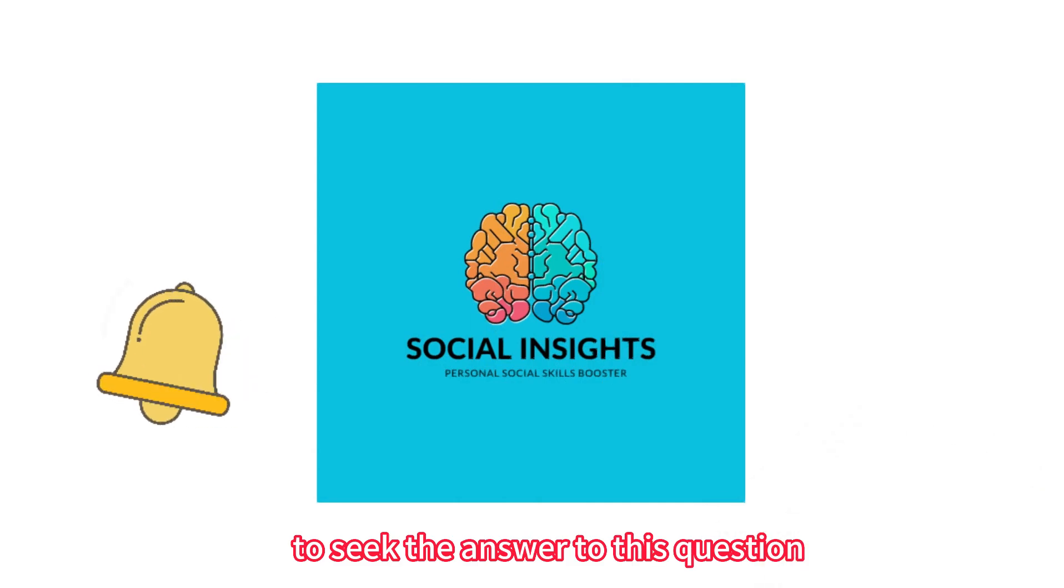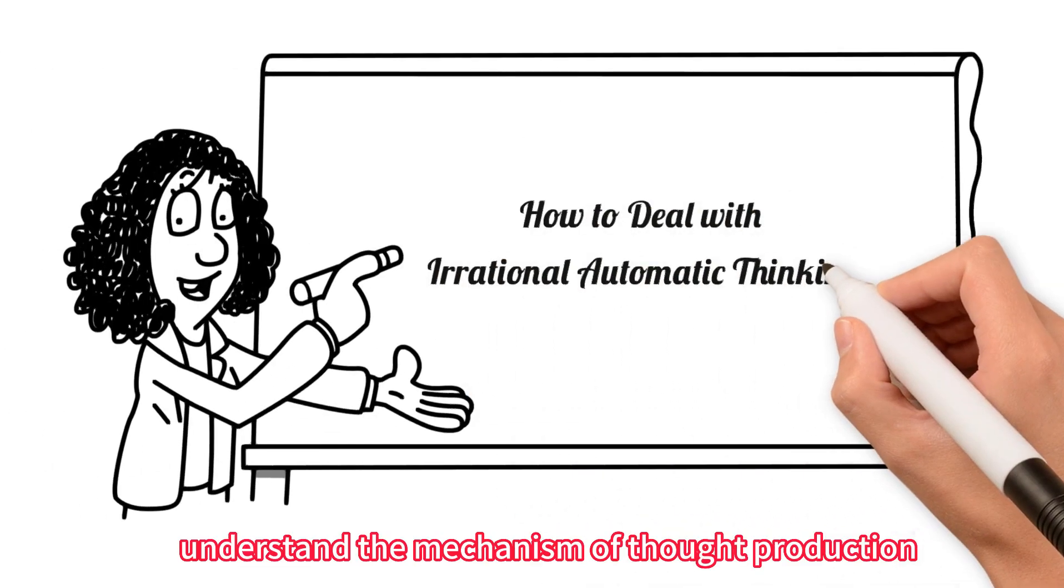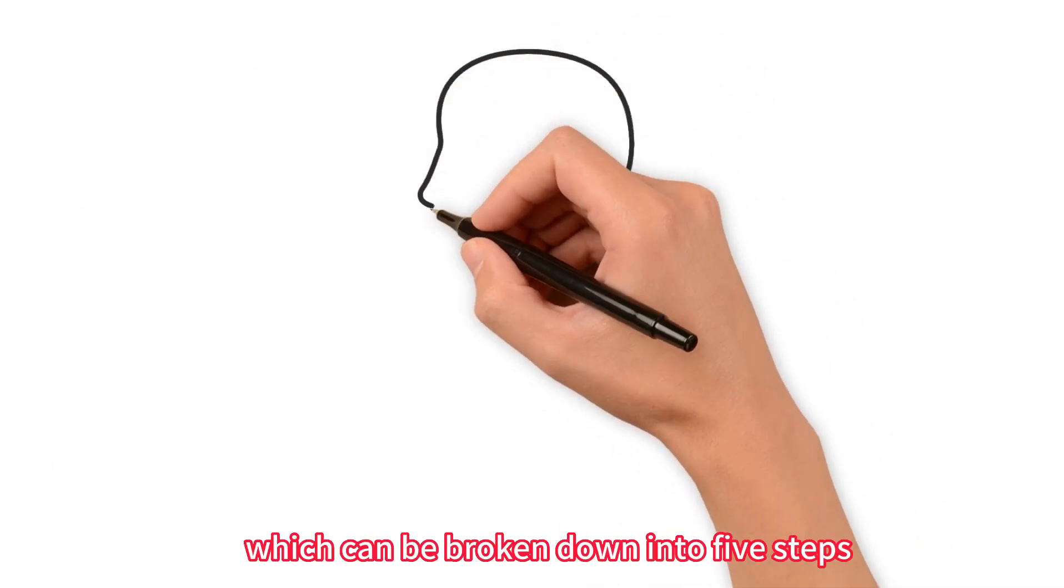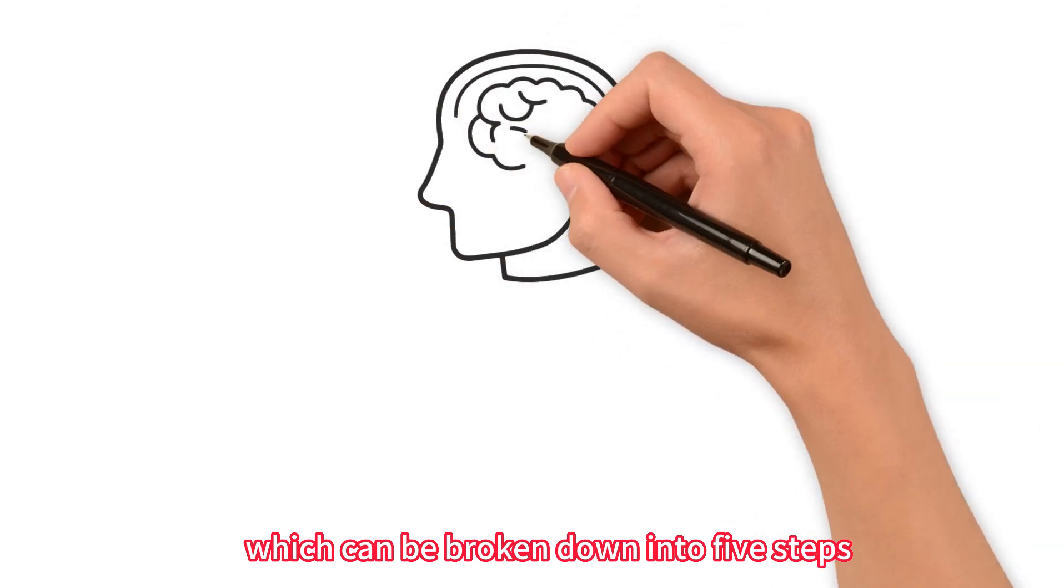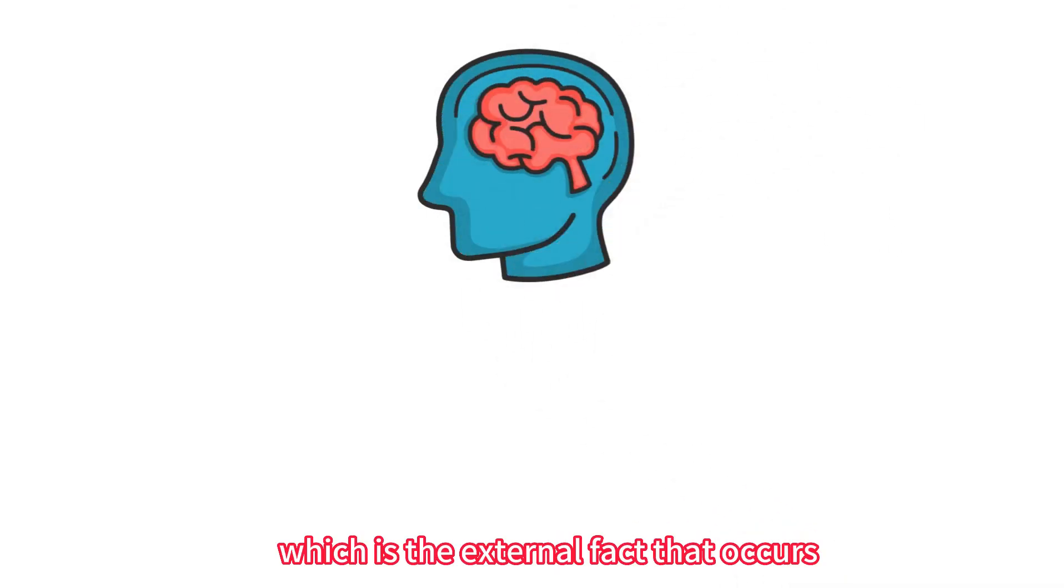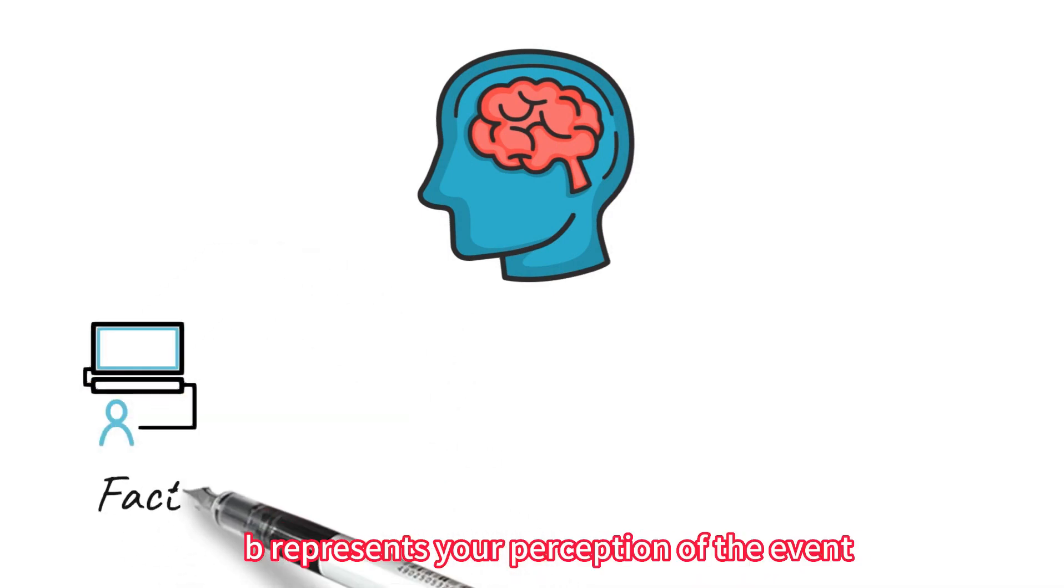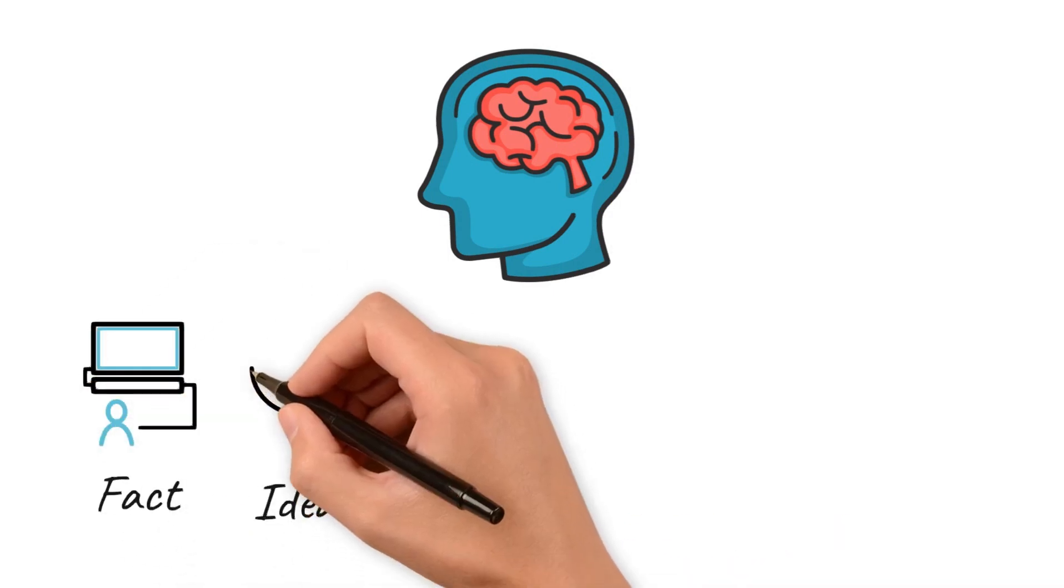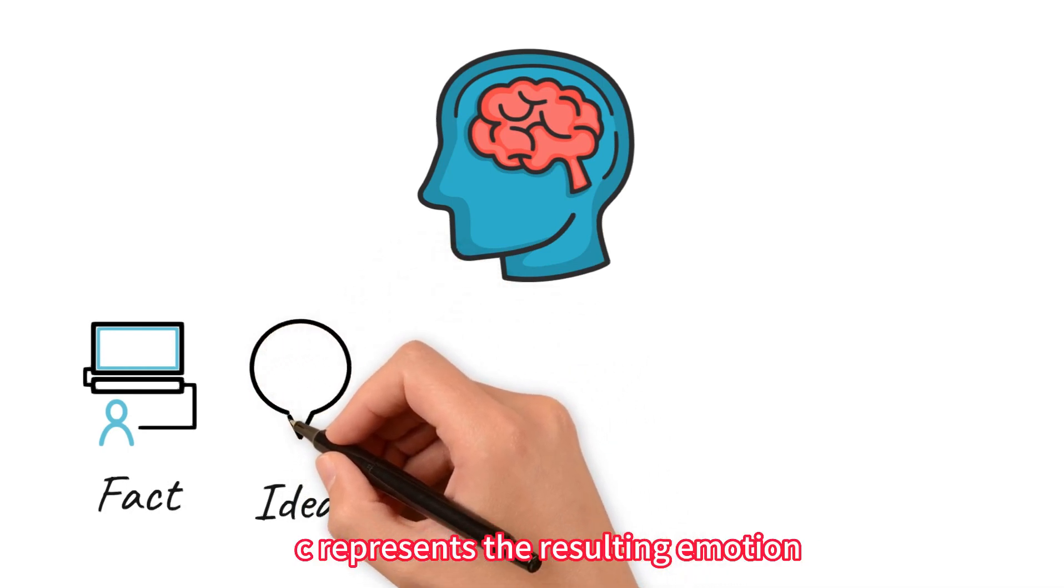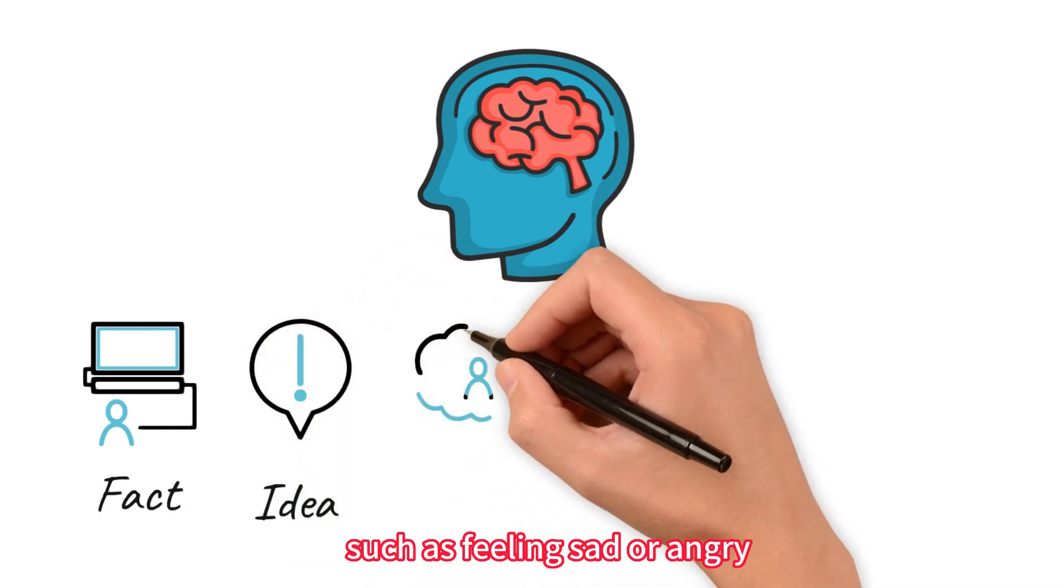To seek the answer to this question, we first need to understand the mechanism of thought production, which can be broken down into five steps. A represents an event, which is the external fact that occurs. B represents your perception of the event, which is your belief. C represents the resulting emotion, such as feeling sad or angry.